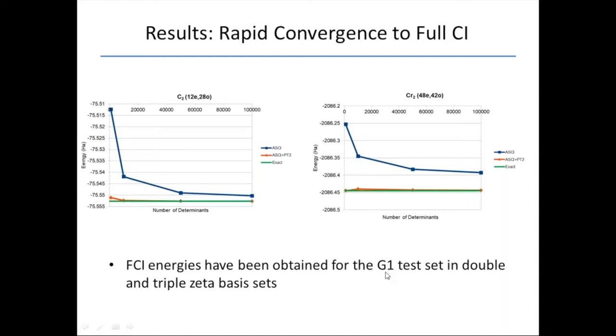So you can actually start getting full CI energies for lots of things. One thing we did is we got full CI for the G1 test set, which is things like ethylene and ethane and phosphine in double and triple zeta basis sets. The striking thing is that the sparsity of the Hilbert space is really something that needs to be taken advantage of.